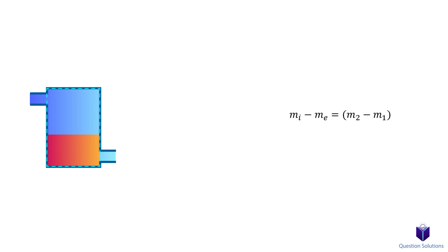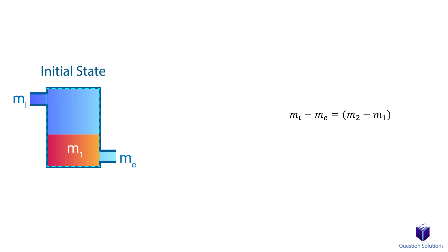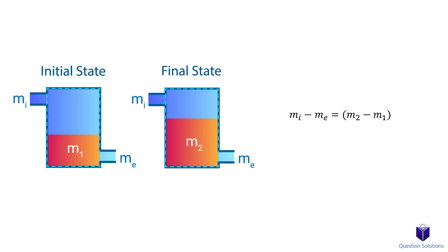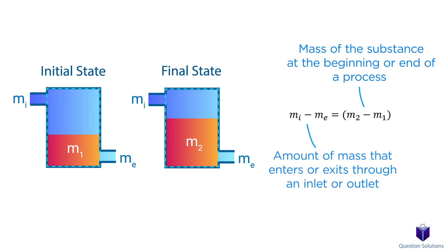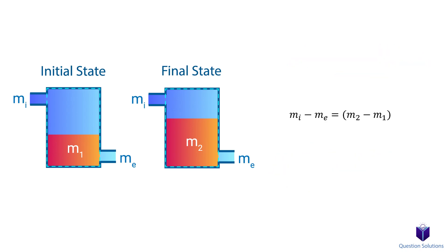When it comes to control volumes, we can write it like this. Remember, a control volume is just a system where mass can enter or exit. The subscript i is for the inlet, e for the exit, 1 for the initial state, and 2 for the final state. m1 and m2 tell us the mass of the substance at the beginning or end of a process. m subscript i and m subscript e tell us the amount of mass that enters or exits through an inlet or outlet. Usually, you will find that some of these terms will end up being zero.